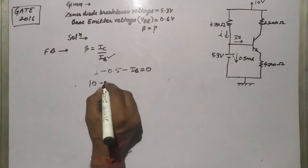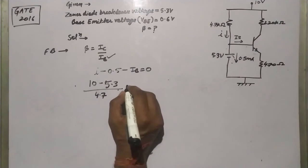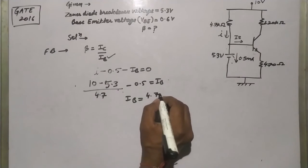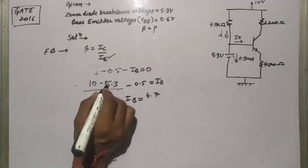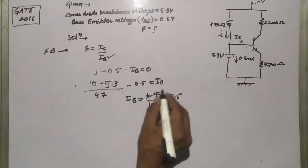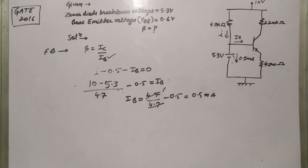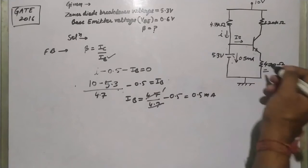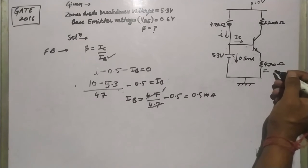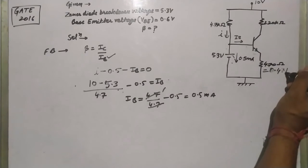Current I equals (10 minus 5.3) divided by 4.7 kΩ, and subtracting 0.5 gives us IB. So (10 minus 5.3) equals 4.7, divided by 4.7 kΩ gives 1 milliampere. Then IB equals 1 minus 0.5 equals 0.5 milliamperes. Note the resistance is 4.7 kΩ, so 4.7 kΩ equals 0.47 kΩ — keep units consistent with milliamperes.